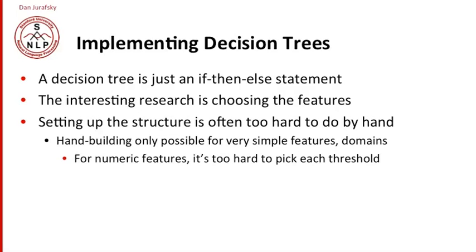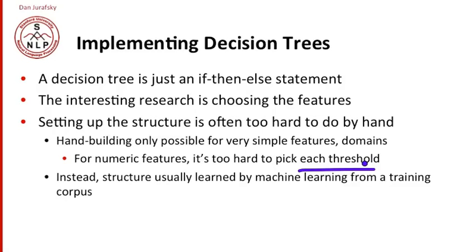But it's very hard to do for numeric features because you have to pick the threshold for each of the numeric features. I'm picking a probability as one of my features. I've got to have a question in the decision tree: Is this probability greater than some threshold theta or not? And I've got to set all those thetas. And so generally, we use machine learning that learns the structure of the tree and learns things like the threshold for each of the questions that we're asking.